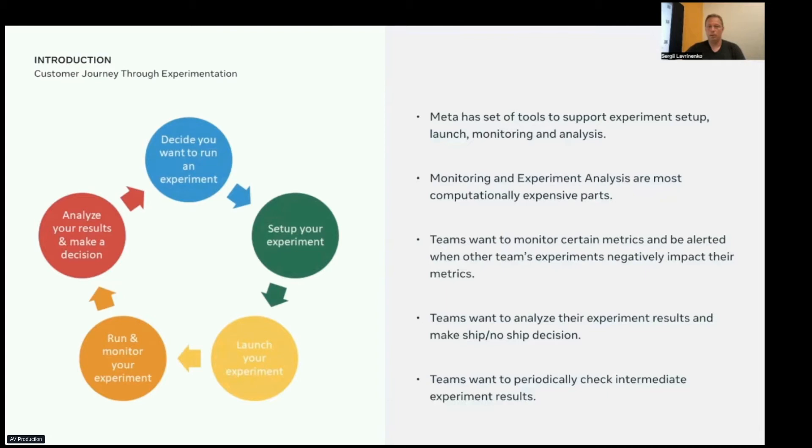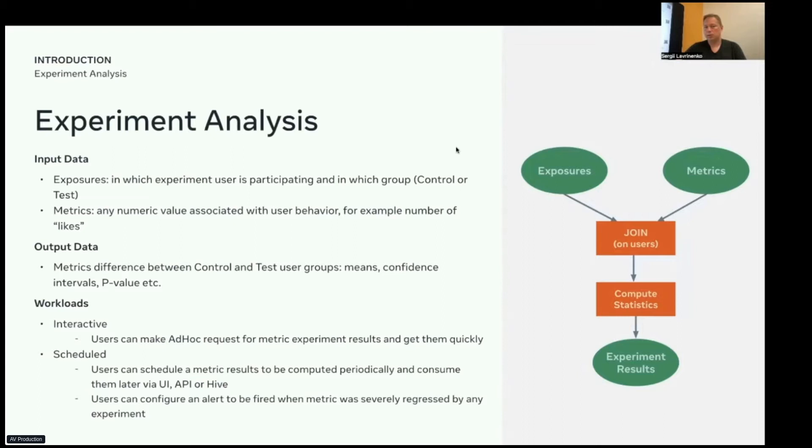Analytic service uses two main data sources for its analysis. First source is exposures, a set of records specifying which user was participating in which experiment and in which group, test or control, at a certain time. This exposure set is stored as a Hive table. The second source is metrics, a numeric value associated with user behavior, for example, number of likes.